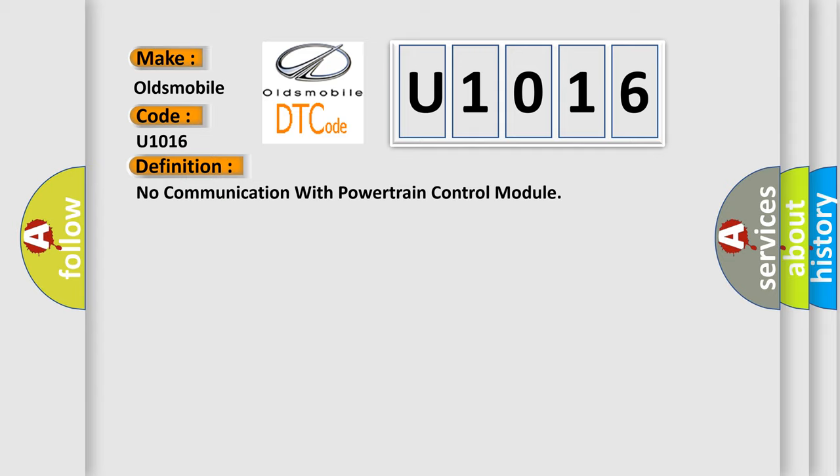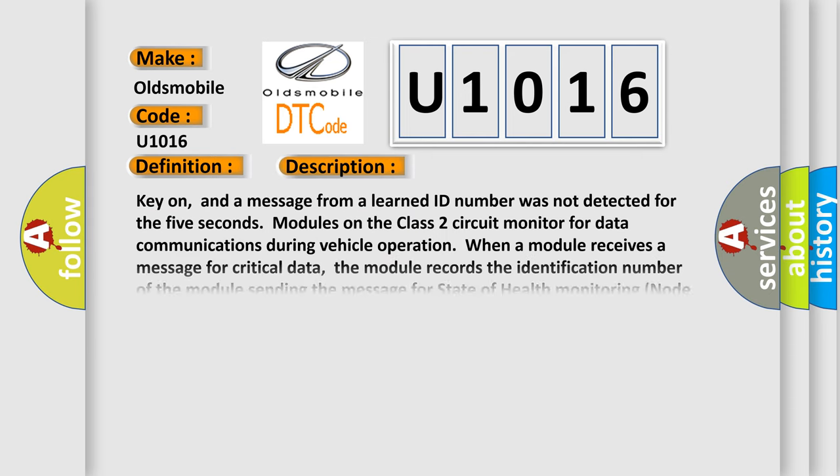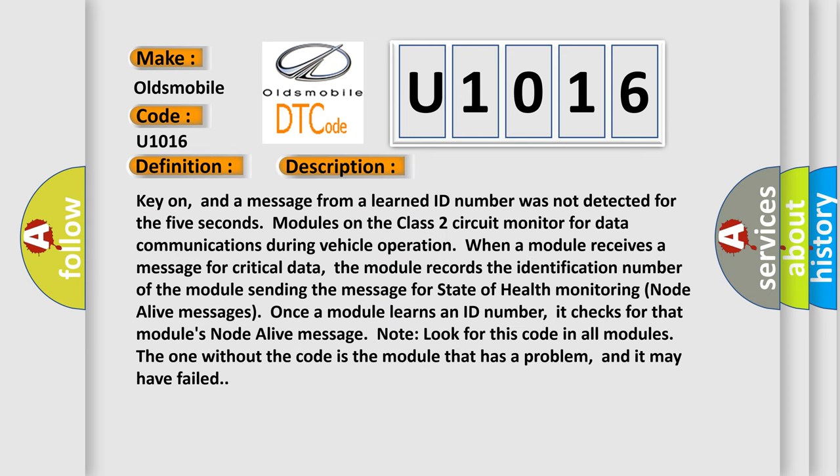The basic definition is: No communication with powertrain control module. Key on, and a message from a learned ID number was not detected for five seconds — modules on the class two circuit monitor for data communications during vehicle operation. When a module receives a message for critical data, the module records the identification number of the module sending the message for state of health monitoring node alive messages. Once a module learns an ID number, it checks for that module's node alive message. Look for this code in all modules; the one without the code is the module that has a problem and may have failed.